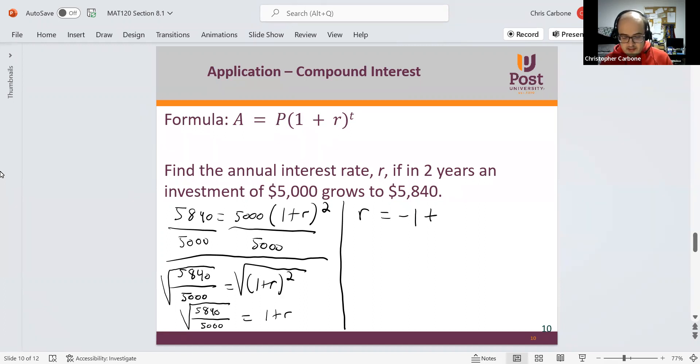So we're going to have plus the square root of $5,840 divided by $5,000. This makes $0.0396, so 3.96%.